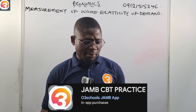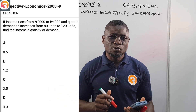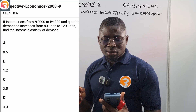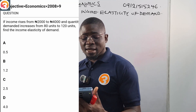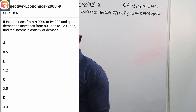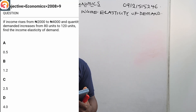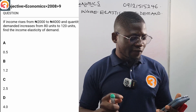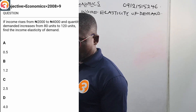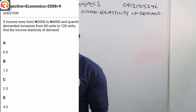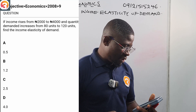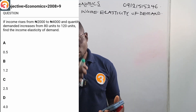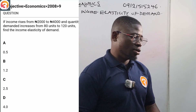Before we talk about the app, let us see a question from it. This is the 2008 question number 9: if income rises from 2,000 naira to 4,000 naira and quantity demanded increases from 80 units to 120 units, find the income elasticity of demand. Options: A) 0.5, B) 1.2, C) 2.5, D) 4.0.